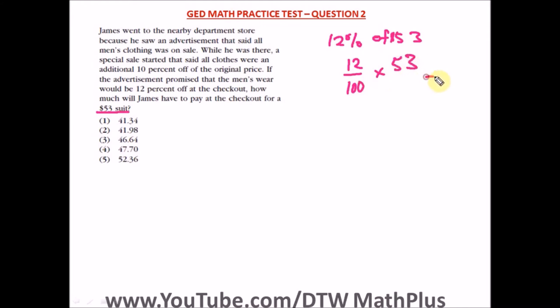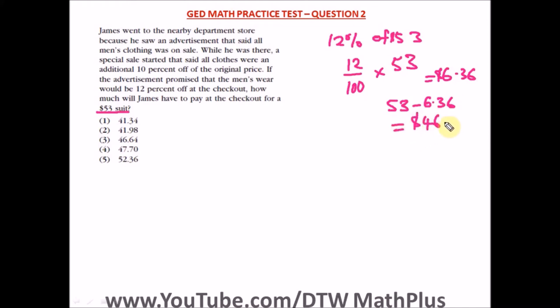The original price of the suit is $53, and the first advertised sale was 12% off. So let's get 12% of $53: that's 12 divided by 100, times 53, which gives us $6.36. Now let's subtract that from $53: 53 minus 6.36, punching into your calculator, gives us $46.64.